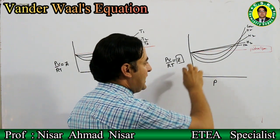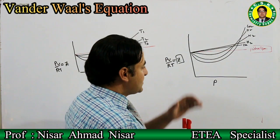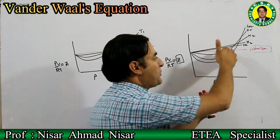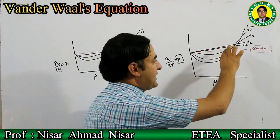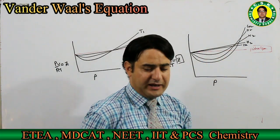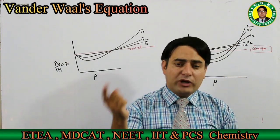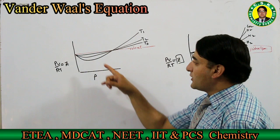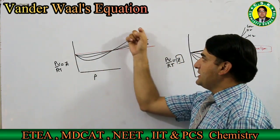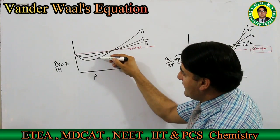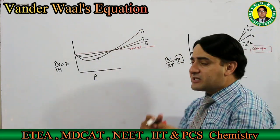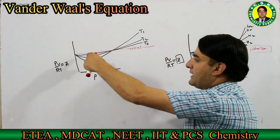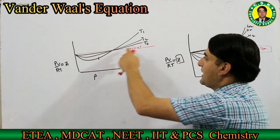The graph shows that at low pressure, some gases have their graph come below the horizontal line, and as pressure increases, it goes back up. Whereas for hydrogen and helium, the graph starts above the horizontal line from the beginning. If we take nitrogen and plot Z against pressure at temperature T1, we get one line. Increasing temperature slightly gives another line, and increasing it further gives a third line.